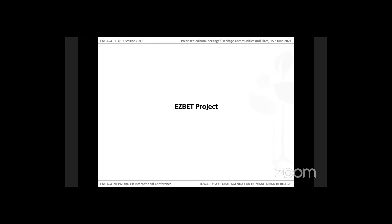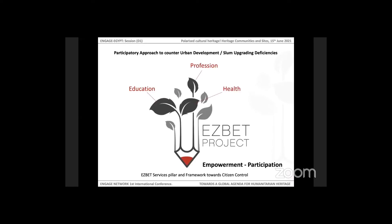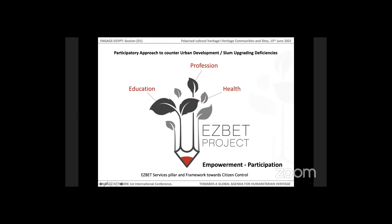So let's go through the Ezbet project. Ezbet project is an academic research project and it developed a participatory approach that counters urban development deficiencies. Three main pillars for development are framing the whole activities and projects towards citizen control and real participation. These three pillars are education, profession, and health. Our vision is formulated based on this understanding where improving life together with a place is the main focus of Ezbet work.